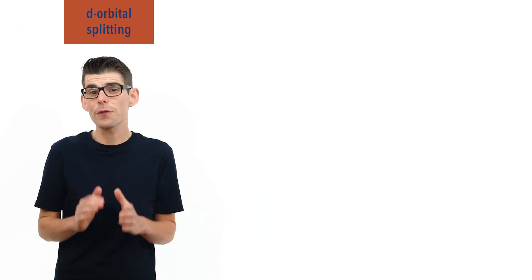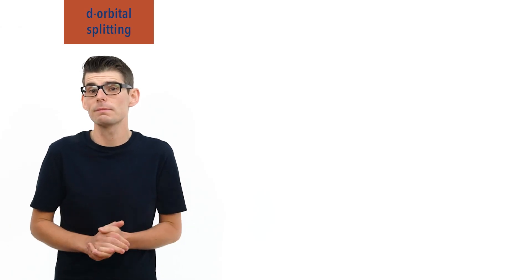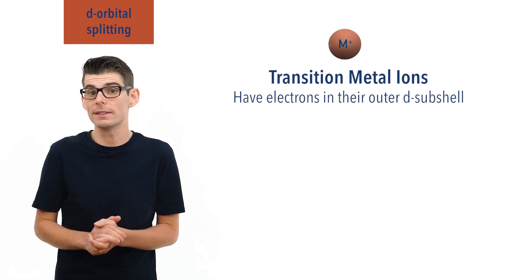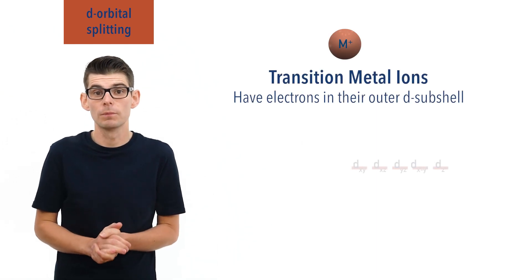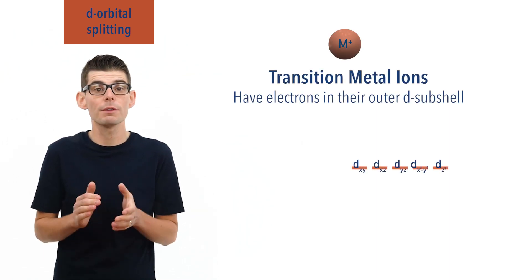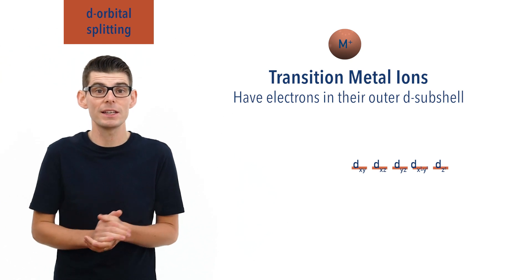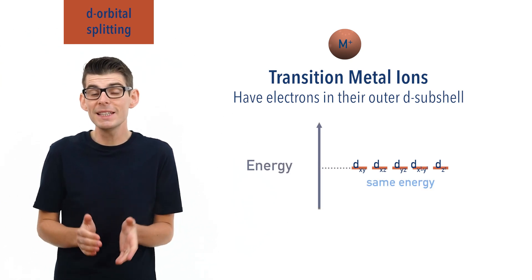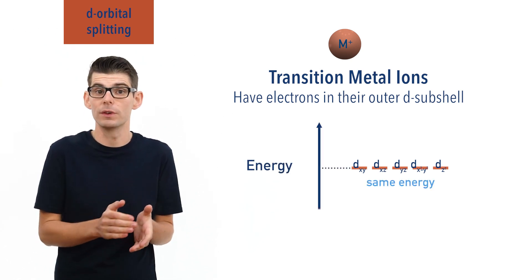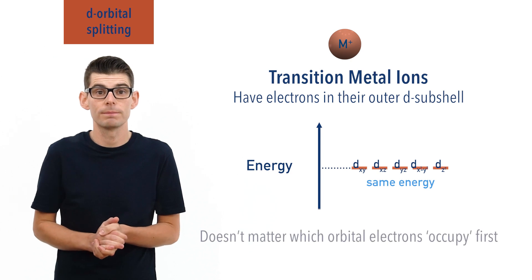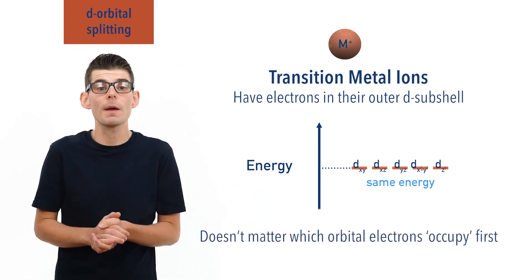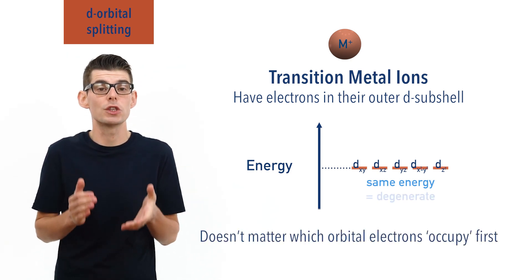A gaseous free transition metal ion has electrons in its outer D subshell. All the orbitals within the D subshell are at the same energy, meaning it doesn't matter which orbital electrons fill first. As they all have the same energy, we describe them as degenerate.